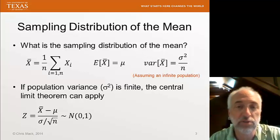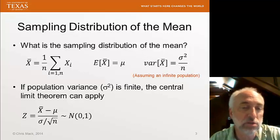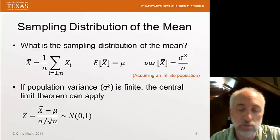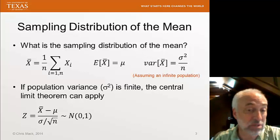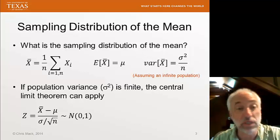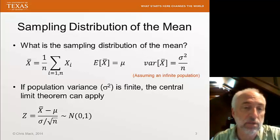If, especially if that underlying population distribution is reasonably symmetric, then only a few samples, 20, 30 sample size, will be enough to allow this central limit theorem to apply. And we can create a z-score, z-statistic, which is a standard normal distribution.